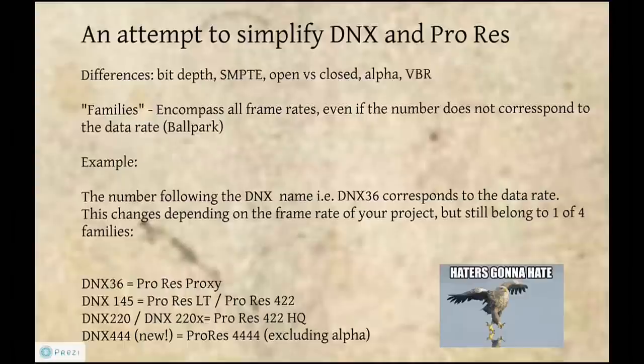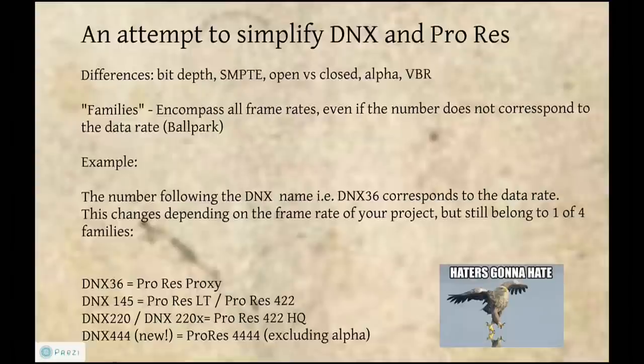ProRes is also VBR — variable bitrate — so it takes up less space than a constant bitrate DNxHD codec. DNxHD is also part of a family that encompasses all frame rates, even if the number in the name doesn't correspond to the actual data rate. For example, if you're working in a 23.98 project and capture at the lowest rate, that's DNxHD 36. But in a 29.97 project, you'll still be in the DNxHD 36 family, but your actual data rate will be 45 megabits per second. As long as you're in the ballpark, you're fine.